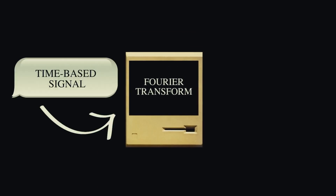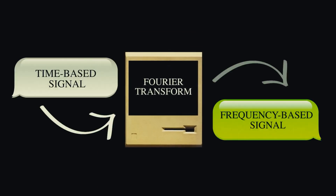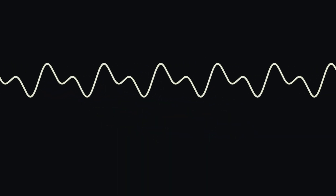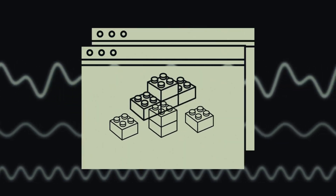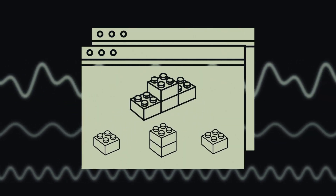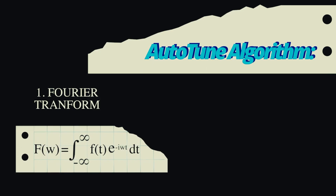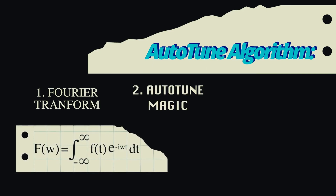It converts any base signal to a frequency-based signal measured in Hertz. Fourier realized that you could express any sinusoidal waveform as the sum of simple sine waves, like Lego blocks for sound. Autotune uses the Fourier transform as part of its algorithm to determine the fundamental frequency of the sound wave, and then it snaps to the nearest pitch.